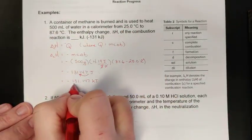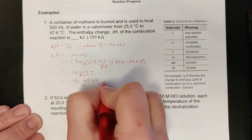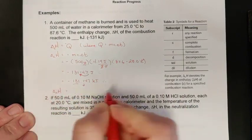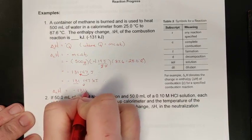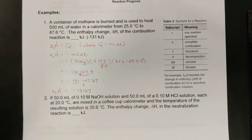That now gives me negative 131.147 kilojoules. I do have to correct this to my three sig dig limit that I saw from the numbers that were used here. There's my three digits—the one rounds down—and so I do get to finally state that the combustion enthalpy for methane is negative 131 kilojoules in this particular reaction.